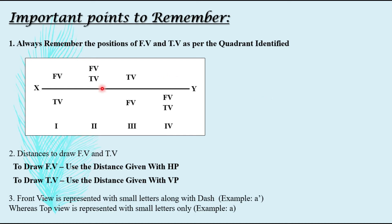First, you have to remember the front view and top view positions as per the given quadrant. Second, in order to draw the front view you will have to use the distance given with HP, and in order to draw the top view you have to use the distance given with VP. Third and most important, you have to always use small letters for indicating the front view and top view, and the front view is always represented using a dash.